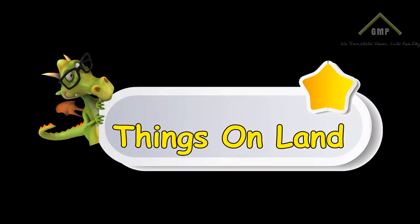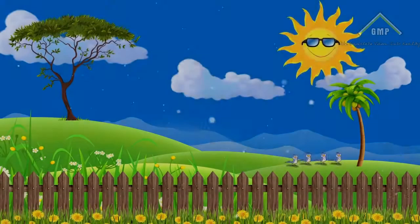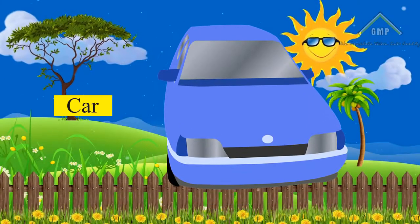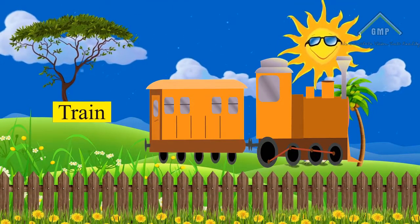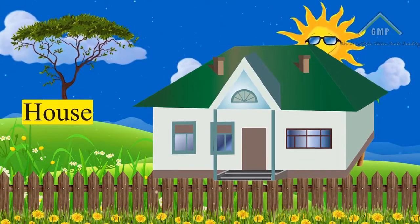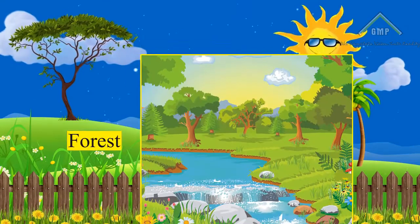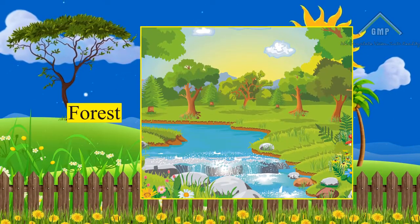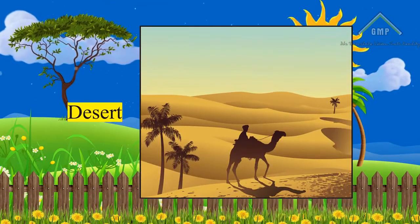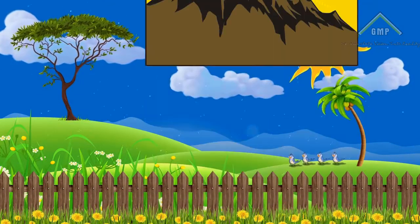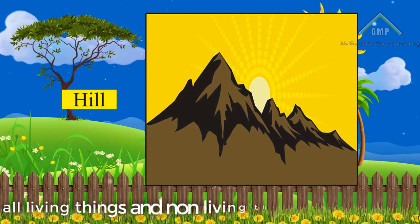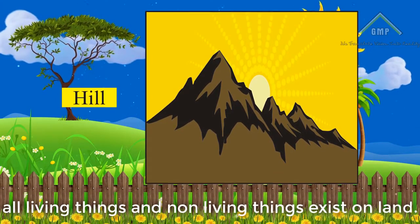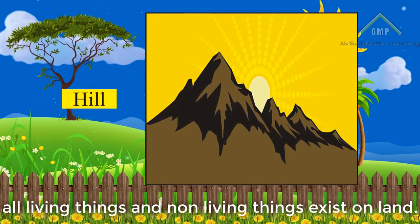Things on land: 1. Car. 2. Train. 3. House. 4. Forest. 5. Desert. 6. Hill. All living things and non-living things exist on land.